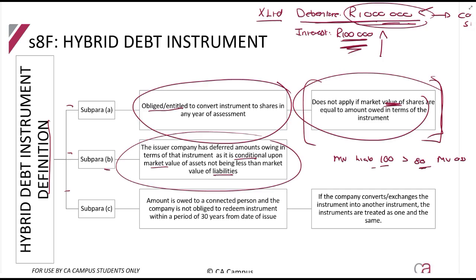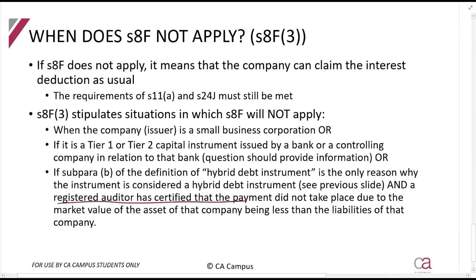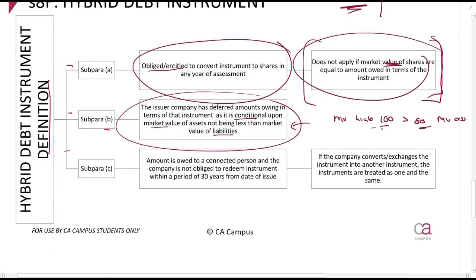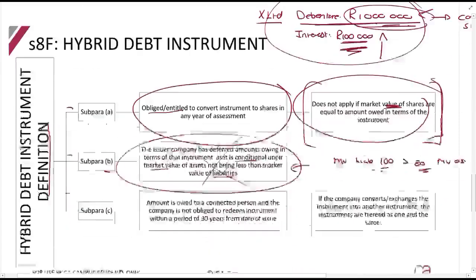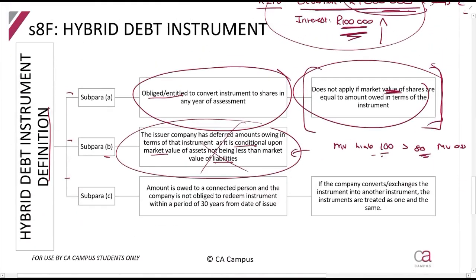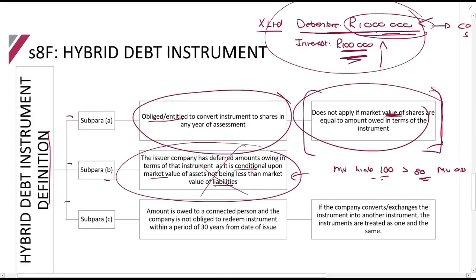There is one exception: if a registered auditor has certified that the market value of the liabilities exceeds the market value of the assets, you don't have to apply this section — you continue treating it as a debenture. This relates to debt covenants where X Limited is not required to pay interest if liabilities exceed assets, provided an auditor has signed off on it. However, small companies that are not required to be audited cannot do this, and for them the debenture will be considered an equity instrument.